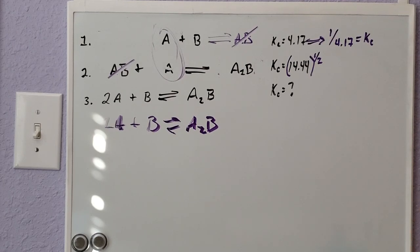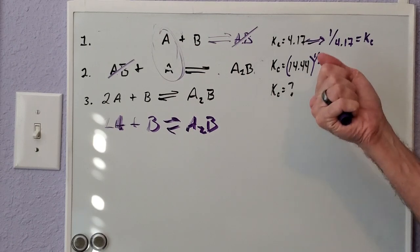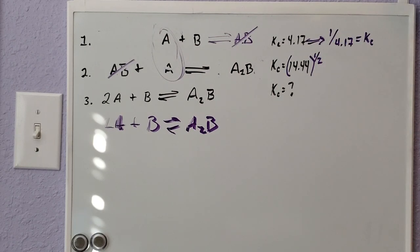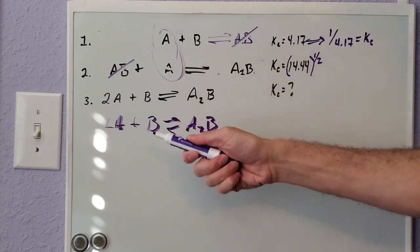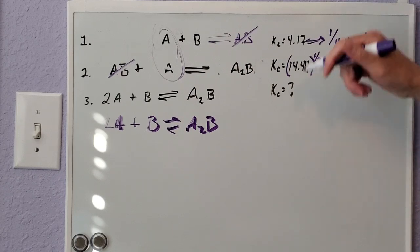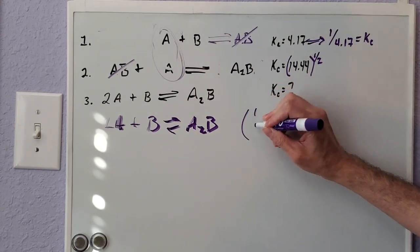The way we did that is we added these two values. Something that's a little bit different when it comes to these equilibrium constants is if you add the reactions, you are multiplying the K values. So here it is no longer just adding these two values; we're now multiplying. Adding these two reactions means you have to multiply their K values.